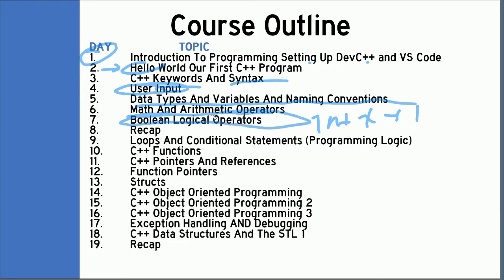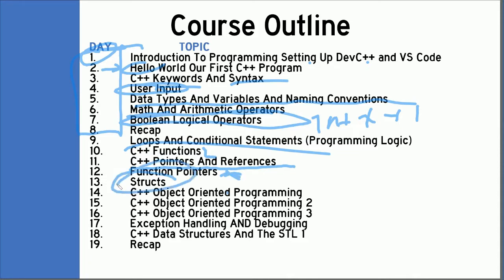On day seven we're going to talk about Boolean and logical operators. Day eight we're going to recap everything we've learned up to that point. Day nine we start talking about loops and conditional statements. Then we get into C++ functions, and then the even more dreaded C++ pointers and references — including function pointers. We'll also cover structs, then three days on object-oriented programming, exception handling, debugging, data structures and STL, and a recap on day 19.